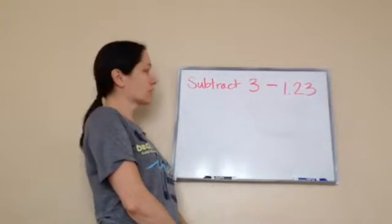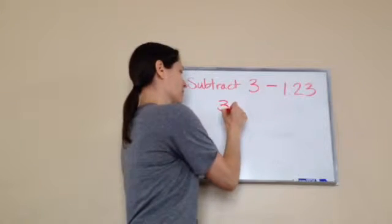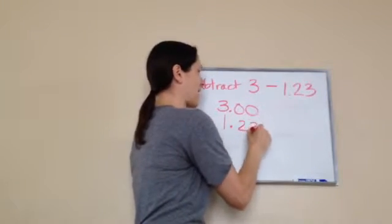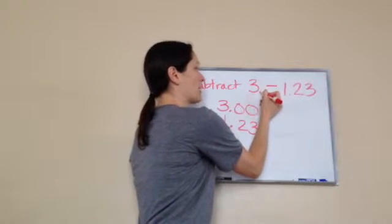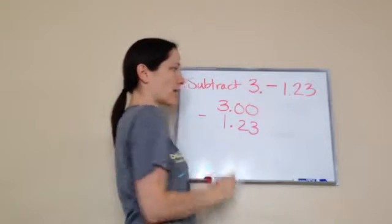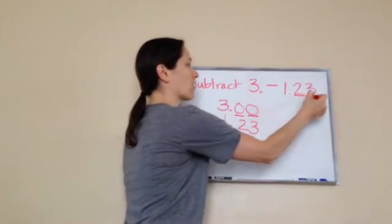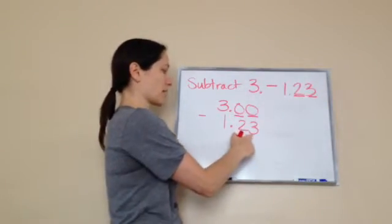It would be 3.00 minus 1.23. Minus 1.23. He did excellent. He remembered that he was supposed to put a decimal after a number, even if you can't see it, and then he had zeros because he saw that this one had two spots after the decimal as well.